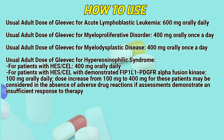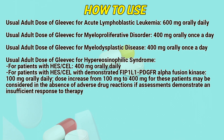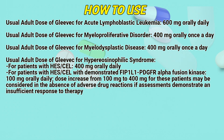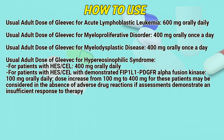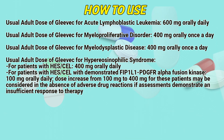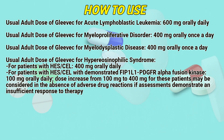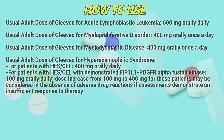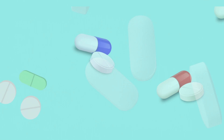Usual adult dose of Glivik for hypereosinophilic syndrome: For patients with HES — 400mg orally daily. For patients with HES with demonstrated alpha fusion kinase — 100mg orally daily. A dose increase from 100mg to 400mg may be considered in the absence of adverse drug reactions if assessments demonstrate an insufficient response to therapy.